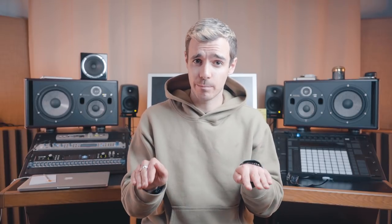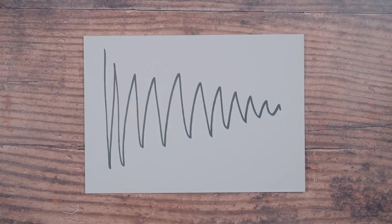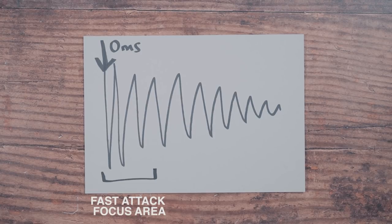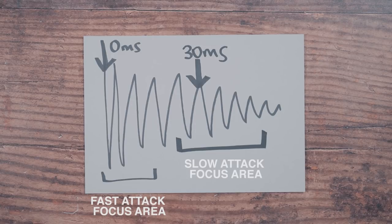For today's quick tip, we're only going to use threshold, attack, release, and makeup gain — we're going to keep it really simple. Here's a basic audio waveform of a generic kick drum. The faster the attack, the faster the compressor will react to the signal and pull the volume down. If the attack is slower, it will essentially bypass the first part of the signal and then pull the volume down later. Don't worry about release for now — I've got a trick I'm going to show you later on how I like to do it.